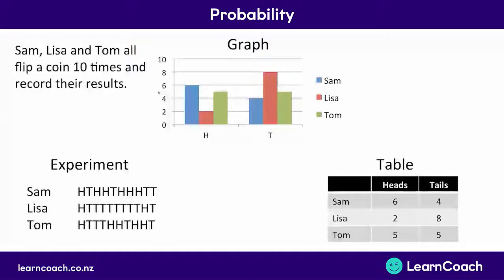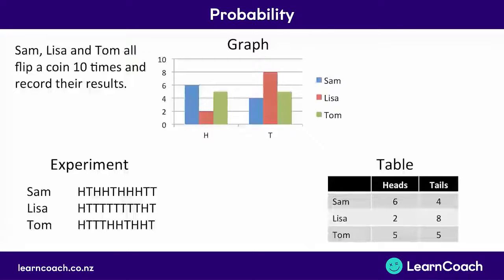However, on average you would expect to see five out of ten times being heads and five out of ten times being tails. This is called our theoretical probability because we're only expecting to see these results in theory. When we do an experiment, often the results are slightly different. They'll average out the same as the theoretical result, but actually in each event it might be slightly different.